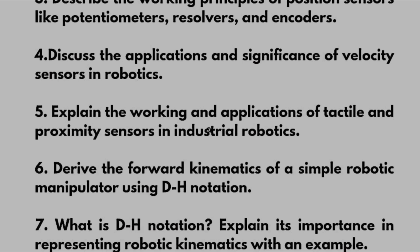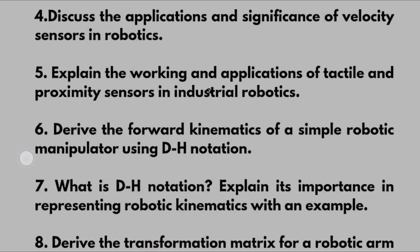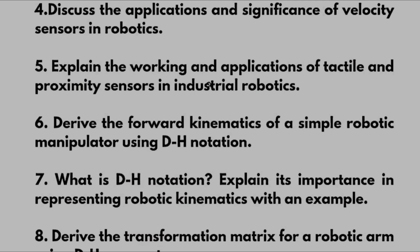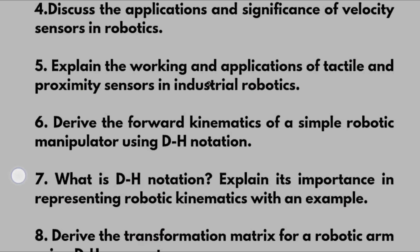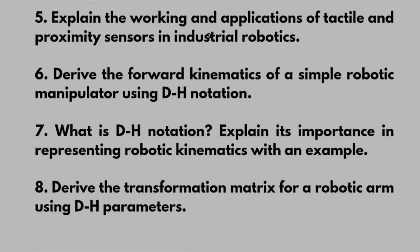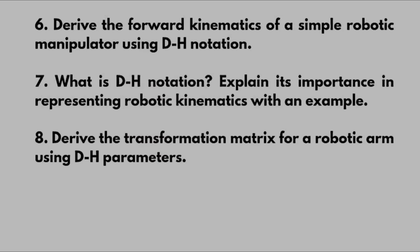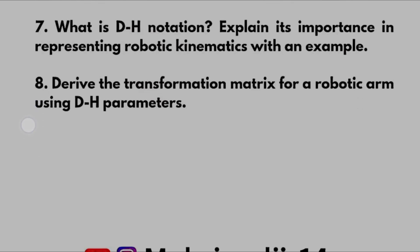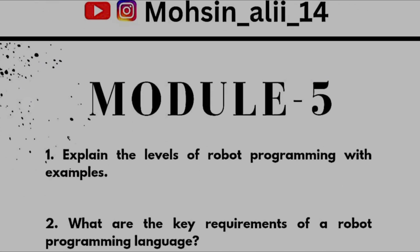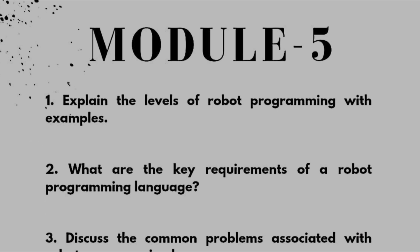Discuss the application and significance of velocity sensors in robotics. Explain the working and application of tactile and proximity sensors in industrial robotics. Derive the forward kinematics of a simple robotic manipulator using DH notation. Explain DH notation and its importance in representing robotic kinematics with an example. Derive the transformation matrix for a robotic arm using DH parameters. This covers Module 4.